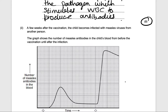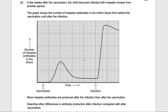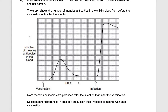A few weeks after vaccination, the child becomes infected with the measles virus from another person. The graph shows the number of measles antibodies in the child's blood from before the vaccination until after the infection. At one point on the graph the child got the vaccination, and at another point the child got the infection.